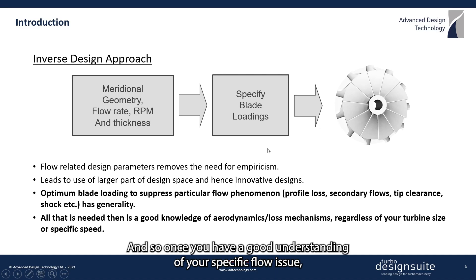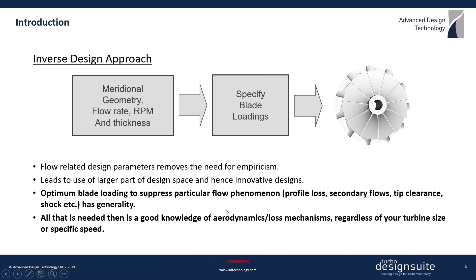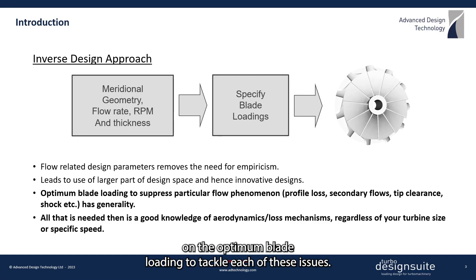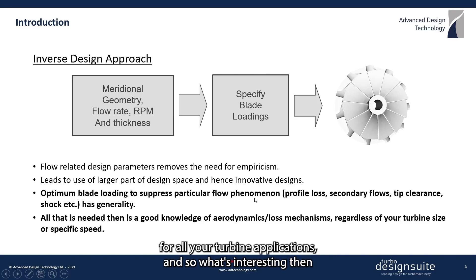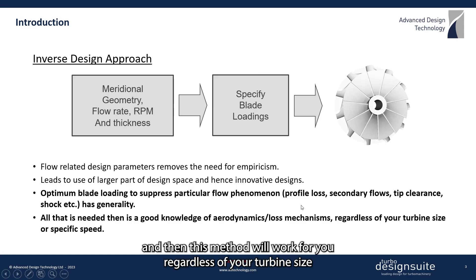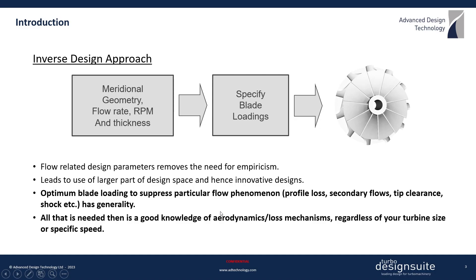Once you have a good understanding of your specific flow issue — whether it's profile loss, secondary flow, or shocks — it's possible to come up with guidelines on the optimum blade loading to tackle each of these issues. This know-how has generality, making it suitable for all your turbine applications. You only need to rely on your knowledge of flow physics, and this method will work regardless of your turbine size or specific speed regime, making the entire process very intuitive and removing any empiricism commonly seen in conventional design methods.